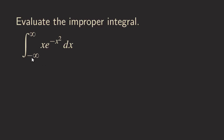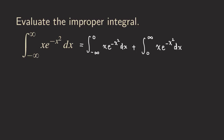One more improper integral: the lower limit is negative infinity and the upper limit is positive infinity. We separate it into two integrals at a convenient point — zero. So we have the integral from negative infinity to 0, and then from 0 to positive infinity, both with integrand x·e^{−x²} dx. We need both to converge for the original integral to converge.